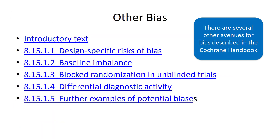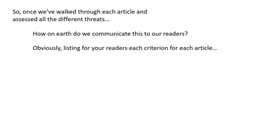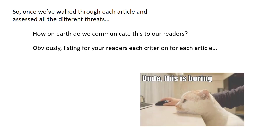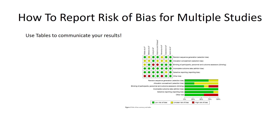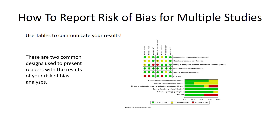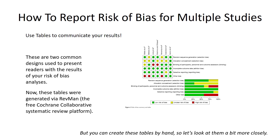There are many other forms of bias, and again you can look in the Cochrane Handbook, or if you're using a different tool, read the documentation. Now let's say we've assessed all our articles — how do we report this? Listing for your readers each criterion for each article is just going to be dreadfully boring, so let's look at a couple of options. First, we could report risk of bias from multiple studies using tables. There are two common designs used to present readers with the results of your risk of bias analysis. These tables were generated via RevMan, the free Cochrane Collaborative Systematic Review Platform, but you can create the tables by hand.